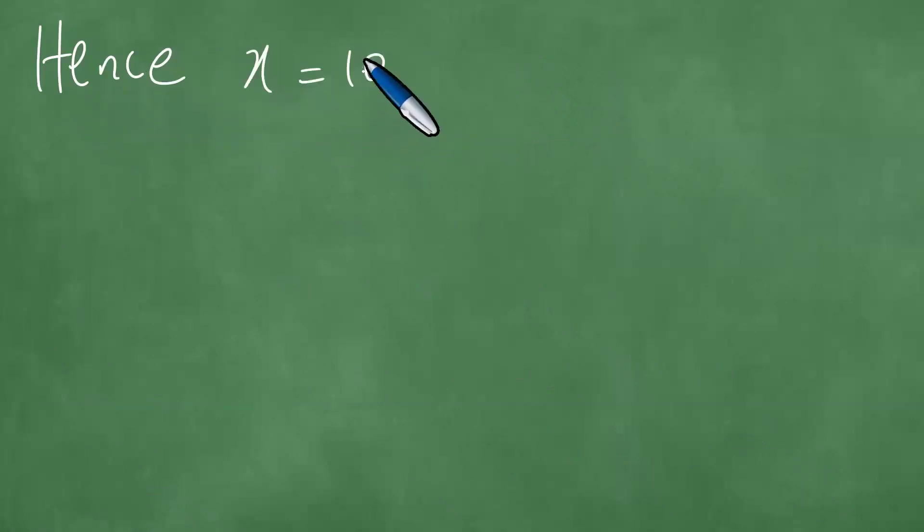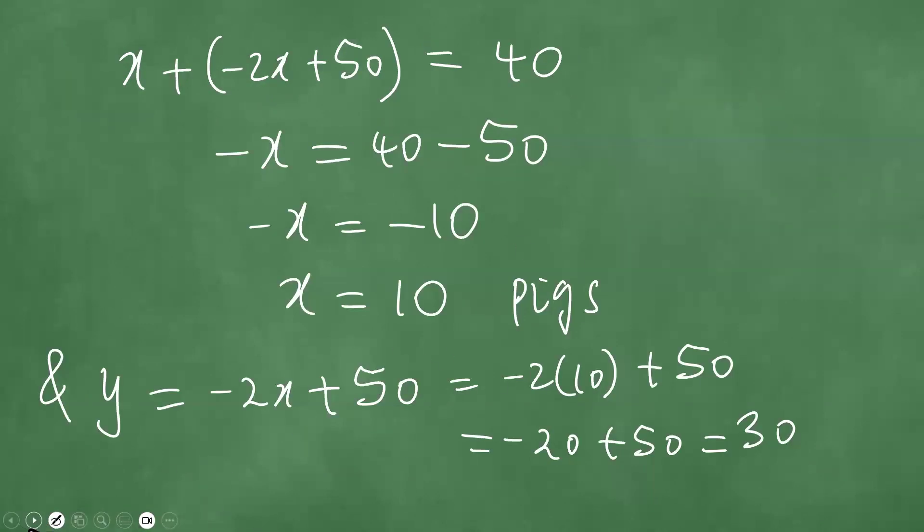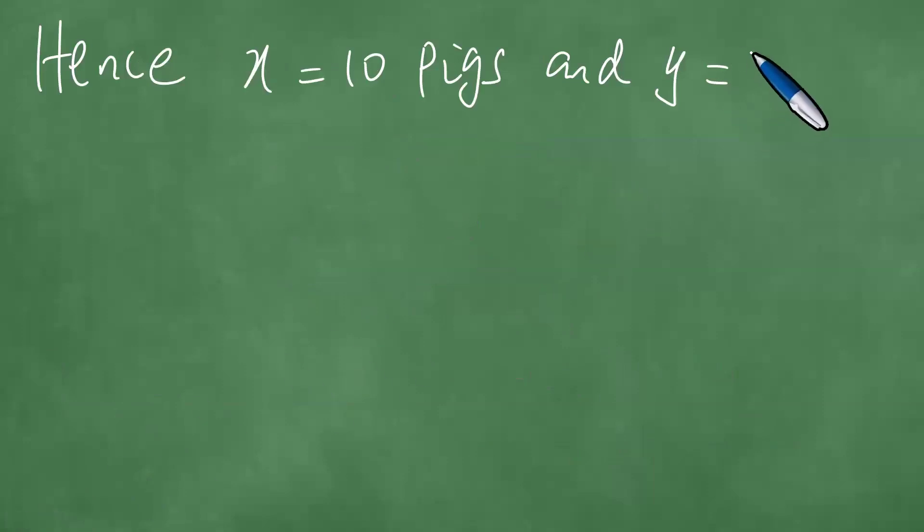Hence, X equals 10 pigs and Y equals 30 chickens. And so this is the answer to the question, and we've solved this in detail.